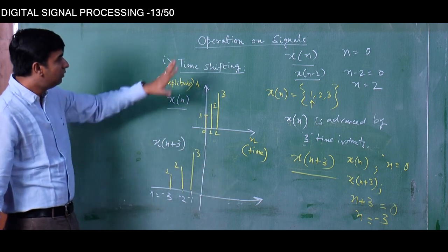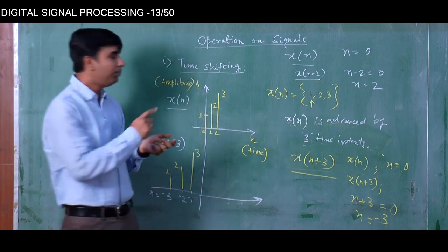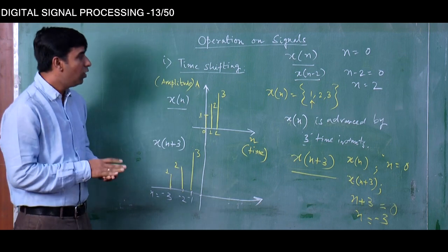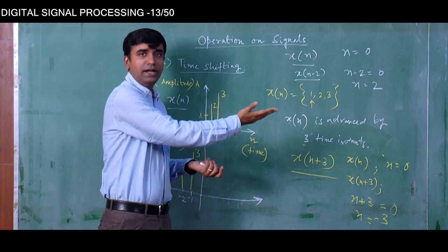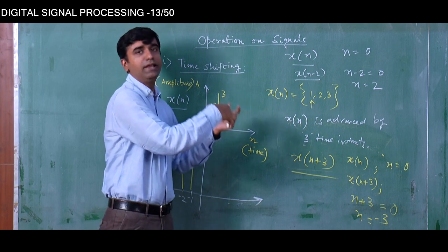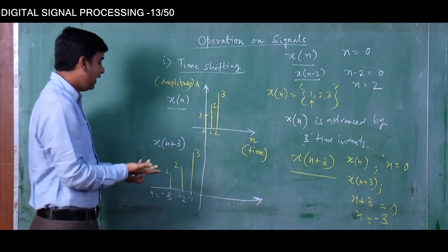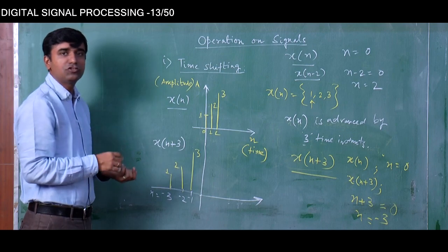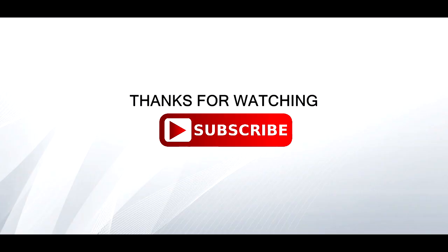These are the two operations that sum up the time shifting operation. One is the time delay operation, given by x of n minus k. The other is the time advancement operation, given by x of n plus k.